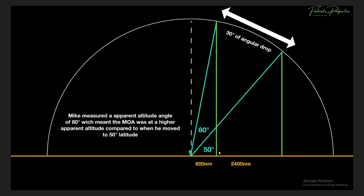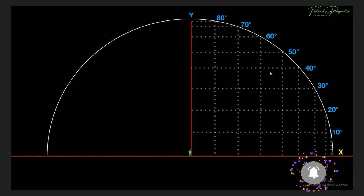Comparing both positions: when Mike looks at 80 degrees and when he looks at 50 degrees, there's a 50-degree apparent angular drop. That is just a perspective angular drop — an apparent altitude drop, not a physical drop. It's simply following his field of view due to perspective. Mike measured an apparent altitude of 80 when he was 600 nautical miles away; when he moved to 50-degree latitude he was 2,400 nautical miles away from Polaris.